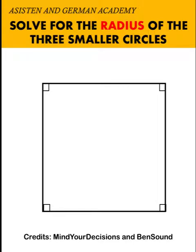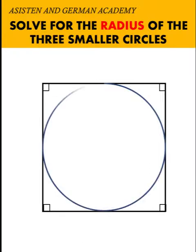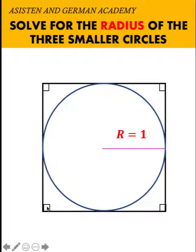Hi everyone, here is our math problem for today. We are given a square with an inscribed circle with a radius of capital R equals 1 unit. At the corner at the bottom, we are also given three identical circles with a radius of small r.